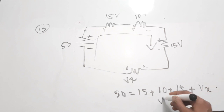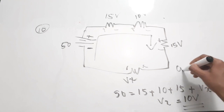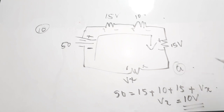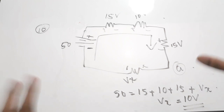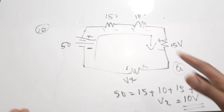Solving for Vx: Vx = 50 − 15 − 10 − 15 = 10 volts. The correct answer is option A — 10V. I've just applied KVL, and I'll soon be doing a video on tricks for KVL and mesh analysis faster using sign conventions.